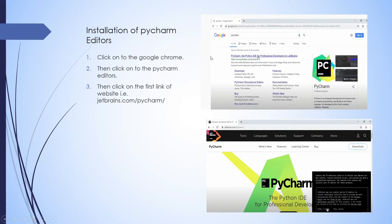First of all, click on to Google Chrome. In the Google search bar, type PyCharm. In the very first link you get PyCharm, the Python IDE for professional developers by JetBrains. Click on to that, and the JetBrains PyCharm website will open.